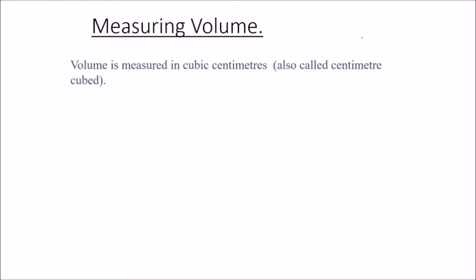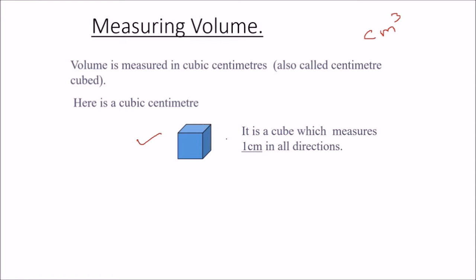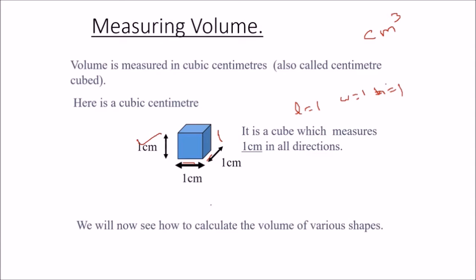Volume is measured in cubic meters, cubic centimeters, or cubic units. Here is a cubic centimeter — it is a cube which measures one centimeter in all directions: length is one, width is one, and height is one, so it is one cubic centimeter.